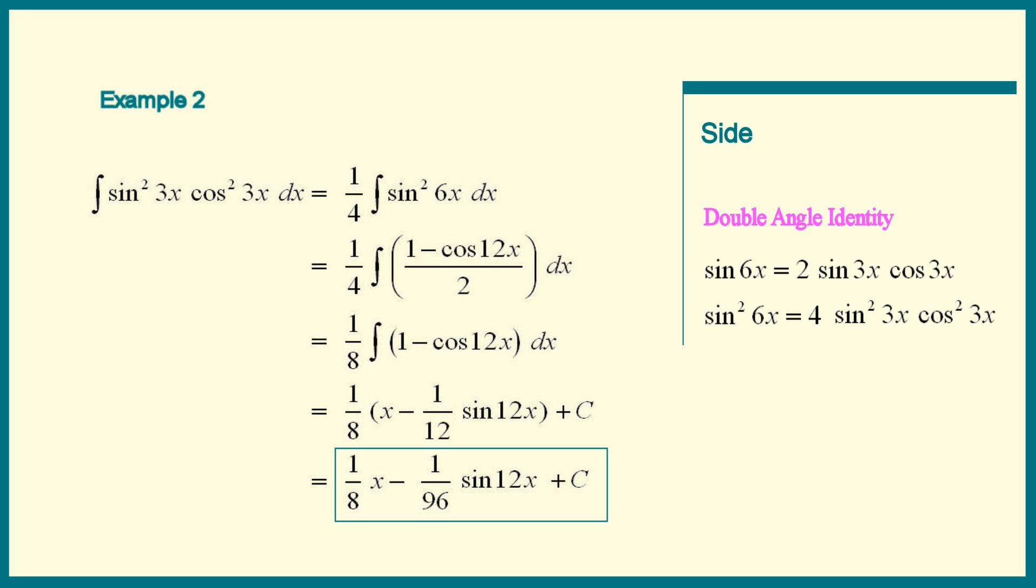That's where the half angle identity for cosine would get used. We rarely see very high powered even problems on exams because a teacher gets a headache correcting those too.